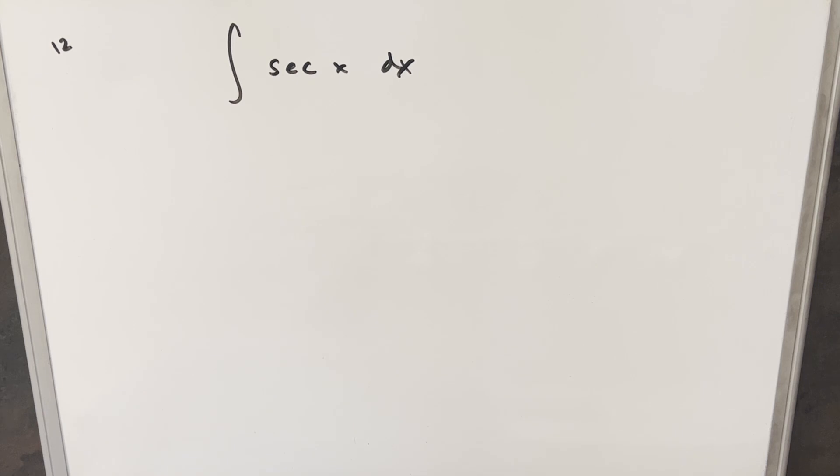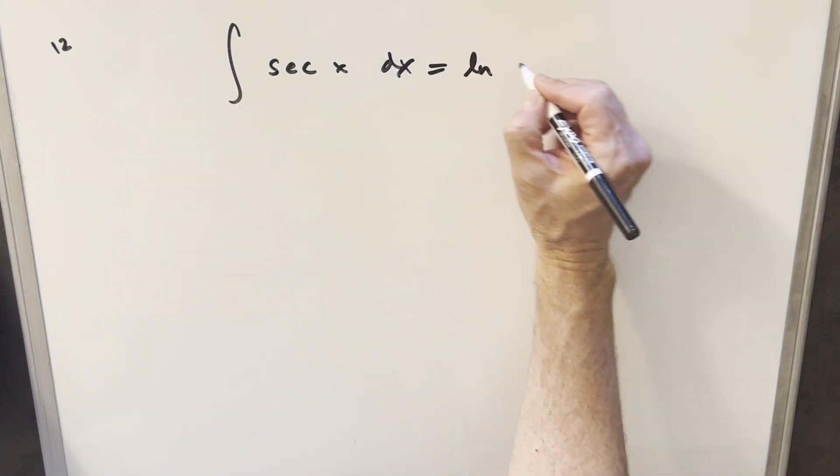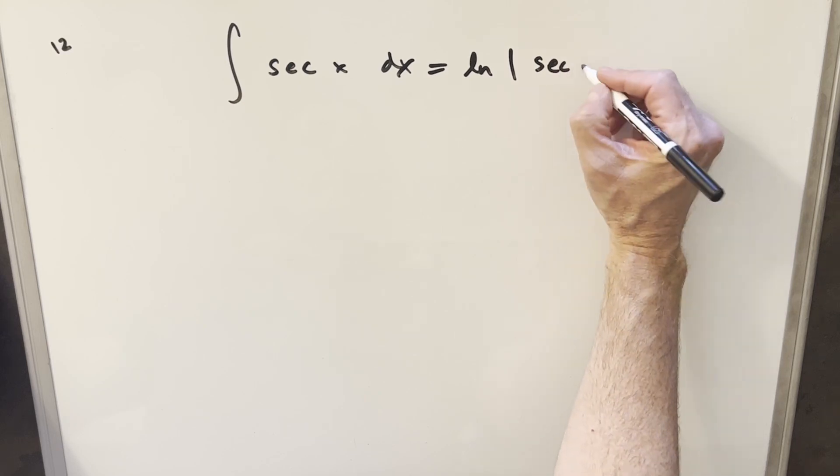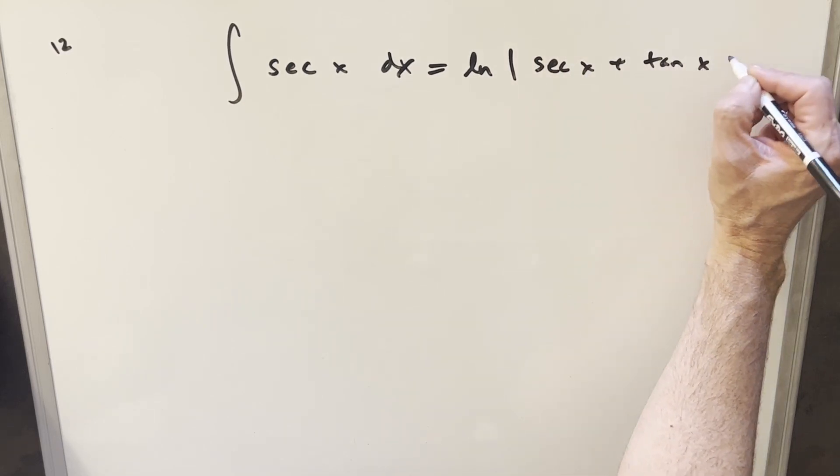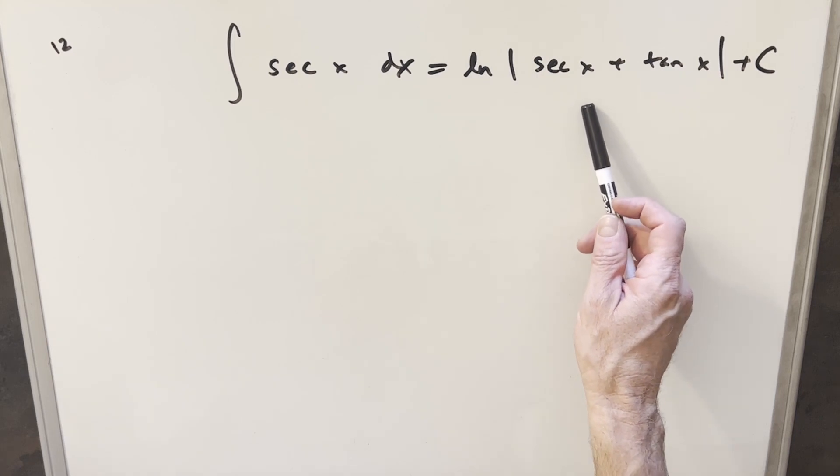So the first thing I want to mention is this is an integral that we usually don't really use any method at all. We just kind of memorize the answer, so probably your easiest method would just be to write down the answer, which we usually write as natural log secant x plus tan x. So this is going to be your fastest method, just memorizing and writing it down.